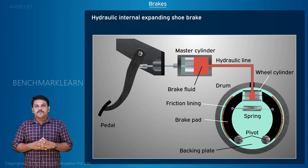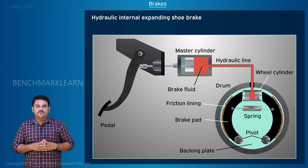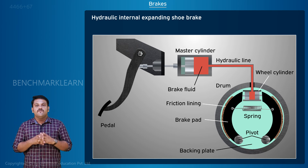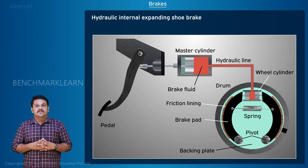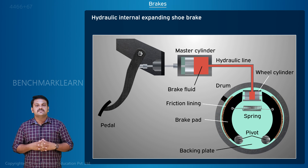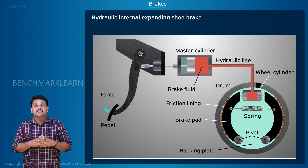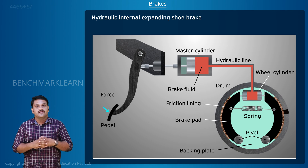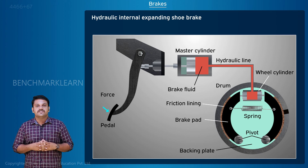Hydraulic internal expanding shoe brake: the operation is similar to that of the hydraulic disc brake. The brake fluid in the wheel cylinder is pressurized due to the action of the brake pedal on the master cylinder. The piston in the wheel cylinder then pushes the brake shoes against the internal face of the rotating drum, causing the rotation to slow down and stop due to friction.